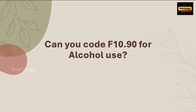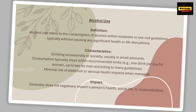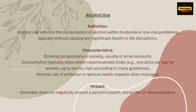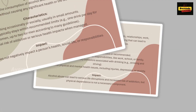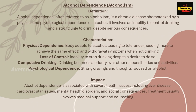In today's topic, we'll explore whether F10.90 is the correct code to use for alcohol use. Alcohol use, abuse, and dependence are terms that describe different levels and patterns of drinking behavior. Alcohol use refers to occasional or moderate drinking within safe limits that doesn't interfere with health or responsibilities. Alcohol abuse involves risky drinking patterns that cause problems in health, relationships, or responsibilities, with negative impacts but not necessarily physical dependence. Alcohol dependence is chronic and compulsive alcohol use characterized by physical dependence, cravings, tolerance, and withdrawal symptoms — dependence, or alcoholism, significantly affects physical and mental health and daily life.